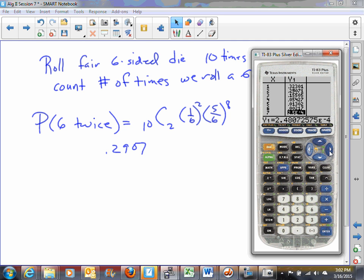This actually turns out to be 0.000248, and eight, nine, and ten. The probability of rolling a six ten times in a row on a fair die is 0.0000000165, so not very likely. And so that will give us the binomial distribution.